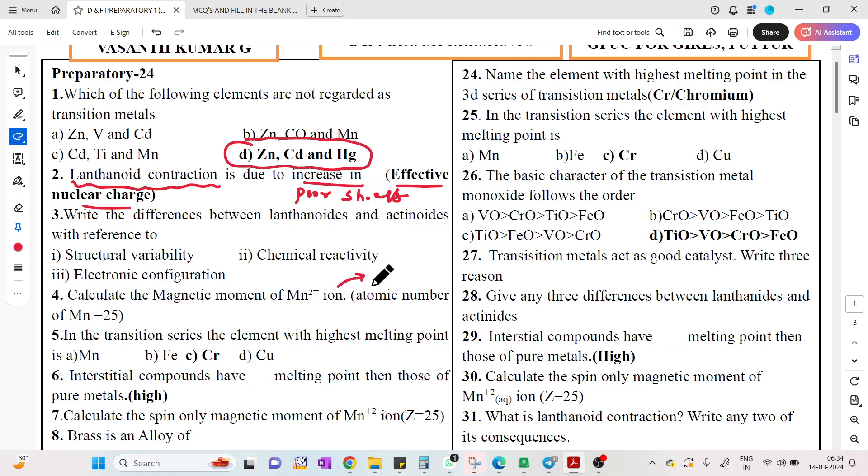Magnetic moment of Mn2+: use the formula root of N into N plus 2, where N is the number of unpaired electrons. In Mn2+ there are 5 unpaired electrons, so the answer you're going to get is 5.92 Bohr magneton.